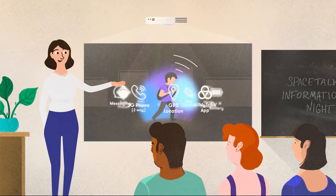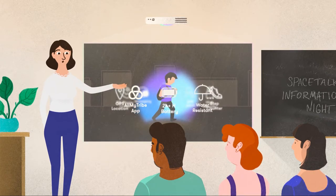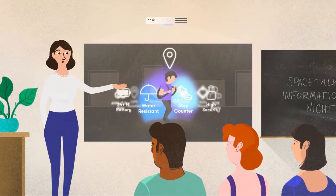Space Talk is a watch that allows your child to make and receive phone calls. When your child's wearing Space Talk, you can see your child's location on your smartphone.